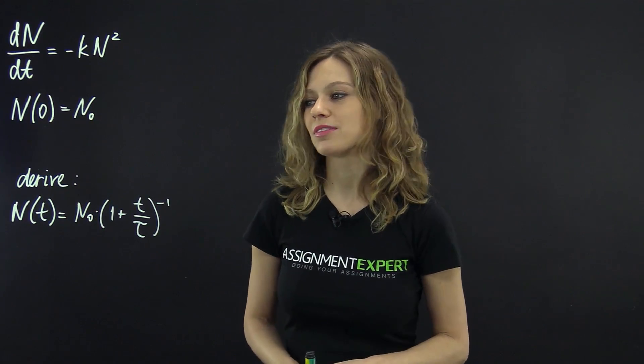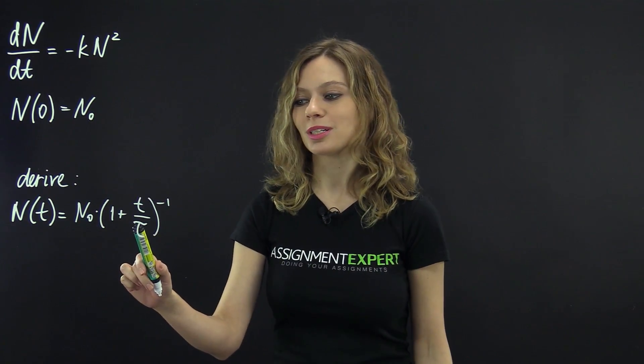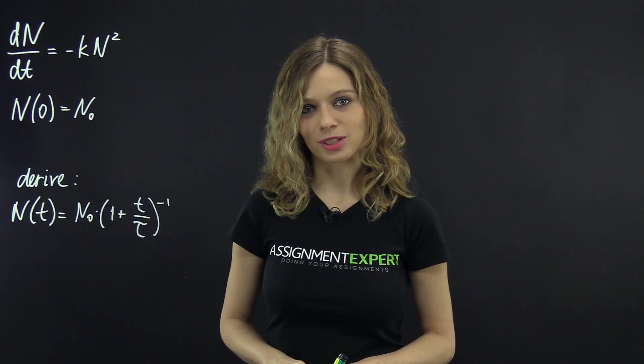We need to derive the solution to this equation, which is N of t equals N sub 0 times 1 plus t over tau to the power of negative 1.